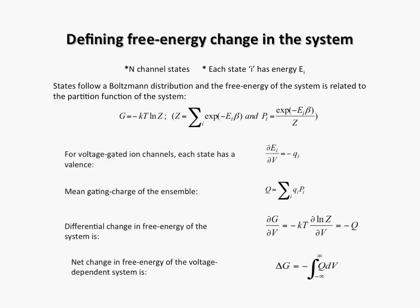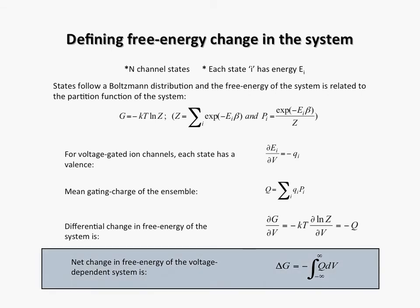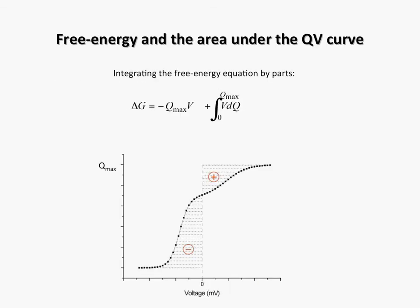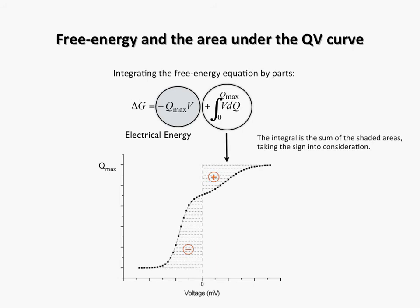On working through the thermodynamic equations, we find that the net free energy change associated with the voltage-dependent system is given by the integral of the QV curve. Here, Q turns out to be the experimentally determined gating charge displacement versus voltage curve. This free energy difference has two components. The first component is a voltage-dependent term which linearly increases with voltage and is the electrical energy of the system. The second component is the area between the QV curve and the ordinate axis and is convergent. This saturating component is a measure of the chemical energy difference between the initial and the final states of the system, which is the parameter of interest. A more detailed mathematical derivation of this principle is shown in the paper.